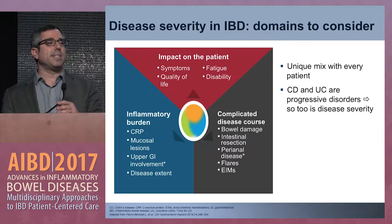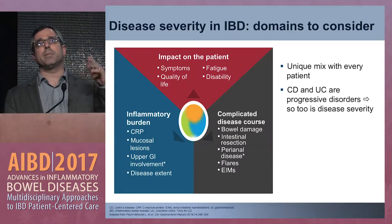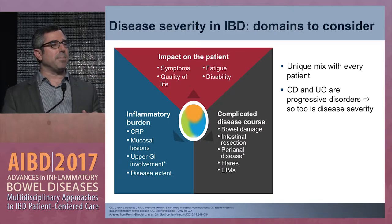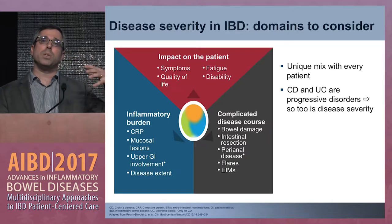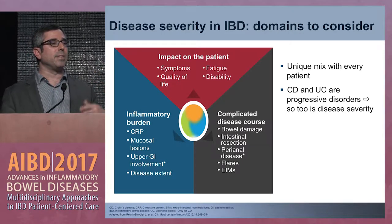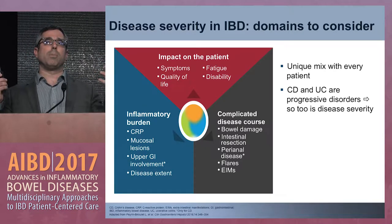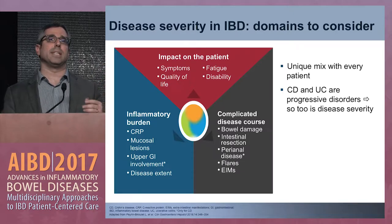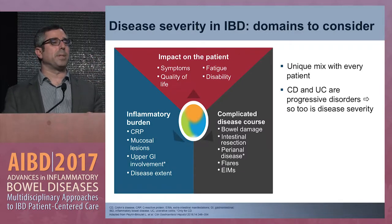We have to think about disease severity in a couple of different domains. One is the impact on the patient — that's their symptoms, quality of life, fatigue, disability. But we have to recognize that a complicated disease course goes into this formula, as does their inflammatory burden. We have to think about the different aspects of their disease, as opposed to what we typically do, which is focus on their symptoms and what to do with them at the time.